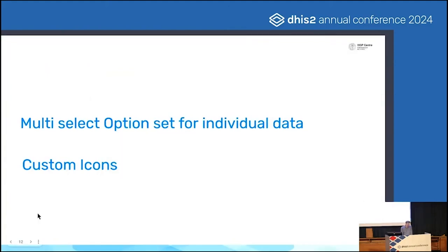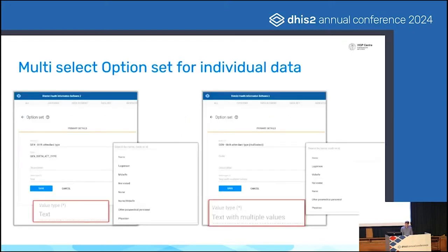Next I'd like to introduce a couple of new features that will be repeated over the different products. These are things that are introduced in 41 but touch a lot of the different product groups. We now have multi-select option sets for individual data and custom icons. I'll just show you a couple of screenshots of how they are implemented in the maintenance app.